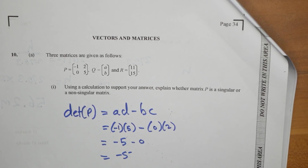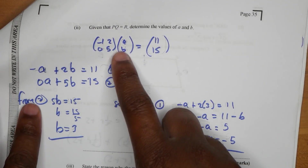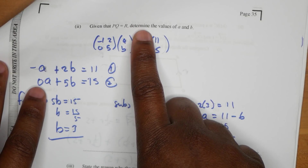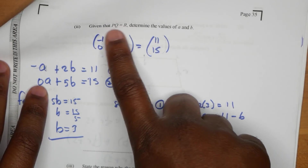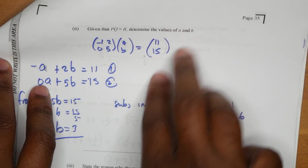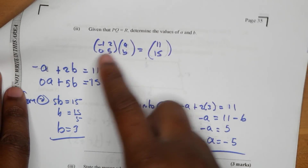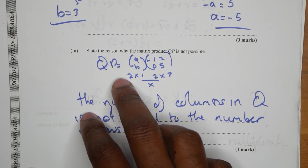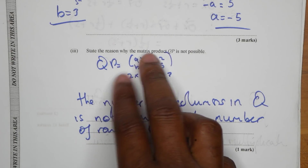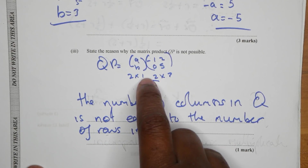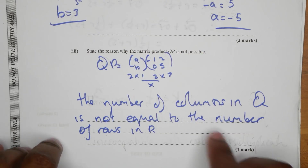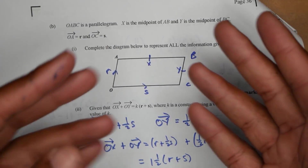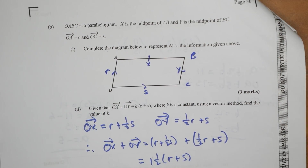Vectors and matrices was nice and sweet — you need to show non-singular, normal stuff. Then there's a little multiplication here — you can actually bring across this and get the inverse and do the whole thing, but you can actually just multiply and get two equations and find what B and A are. This part — because the number of columns is not equal to the number of rows, that's why it's not possible to multiply those.